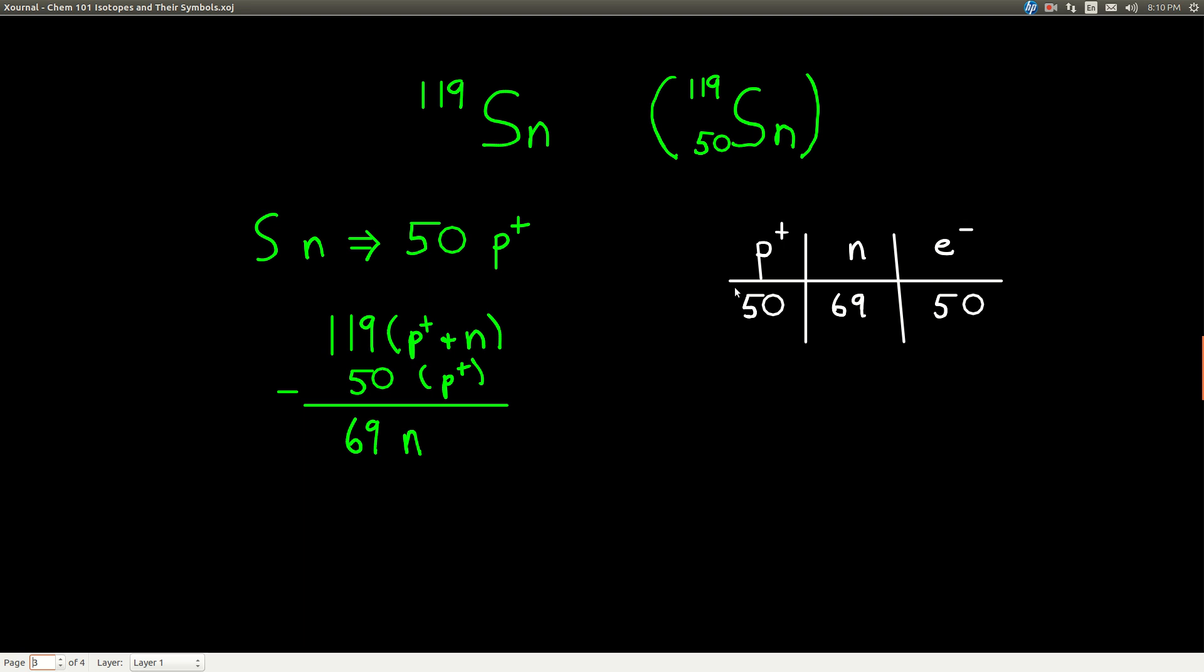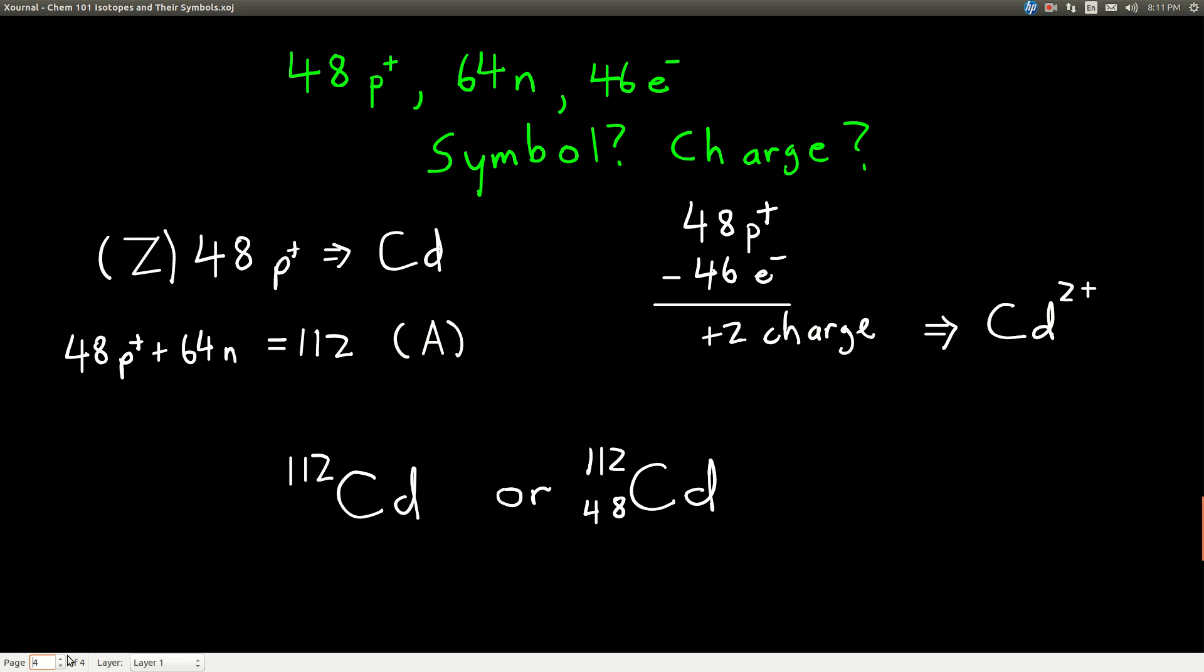Because we have 50 protons, we know we have 50 electrons. So this is what we know about this. Let's look at another example.